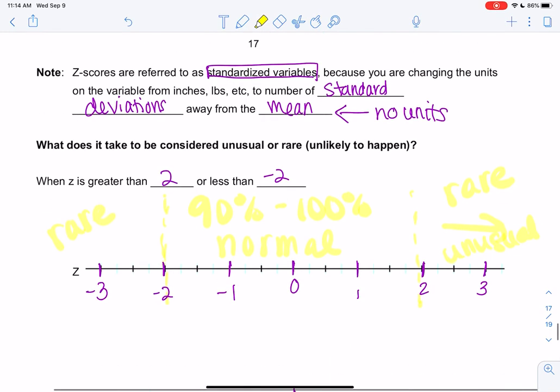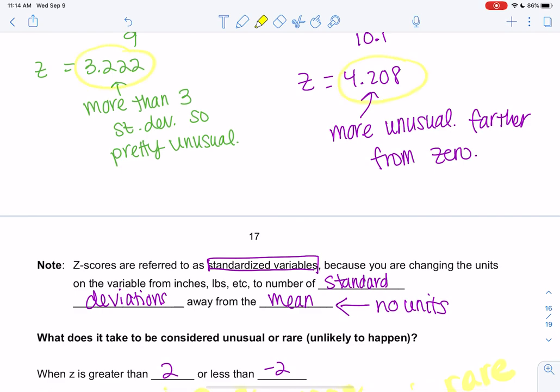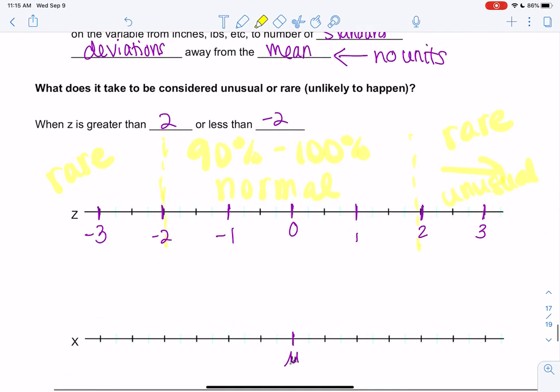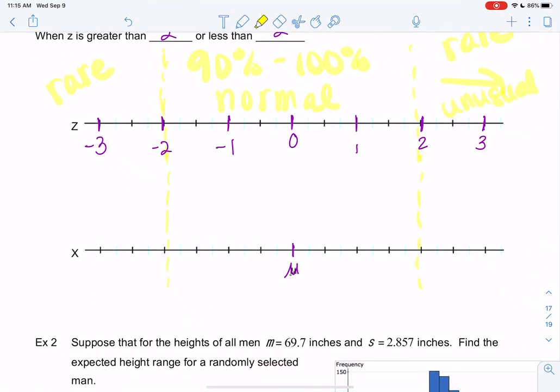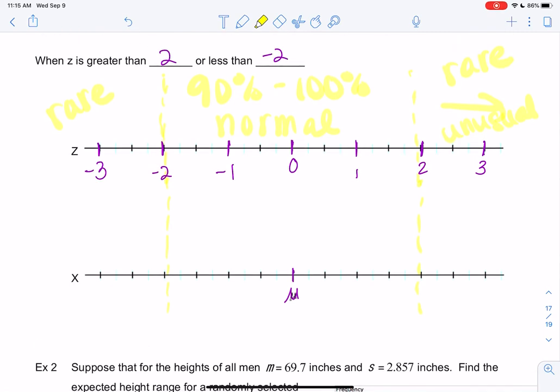And so both of those previous examples were unusual, right, because they're past two. And how do we relate this to the original data? We put the mean in the middle, and then if we add one standard deviation, that's mu plus sigma. Or we could do mu plus two sigma, or mu plus three sigma. Mu is the mean, so the mean plus a standard deviation, the mean plus two, or the mean plus three standard deviations. And you'll notice the number in front matches the z-score. A one is invisible.